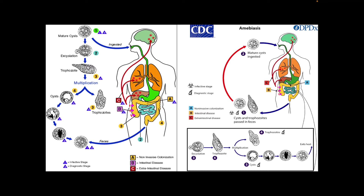For the life cycle of Entamoeba histolytica, it begins when a mature cyst is ingested by a human. The mode of transmission includes ingestion of fecally contaminated material, venereal transmission, and direct colonic inoculation through contaminated enema equipment. The mature cyst of E. histolytica contains four nuclei — the quadrinucleated cyst.